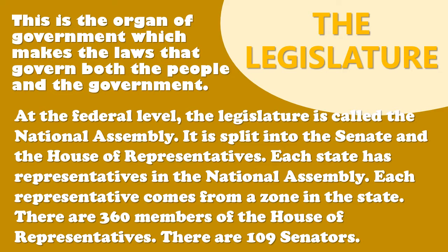The legislature is the organ of government which makes the laws that govern both the people and the government. At the federal level, the legislature is called the National Assembly. It is divided into two areas: it has the Senate and the House of Representatives. Each state has representatives in the National Assembly.